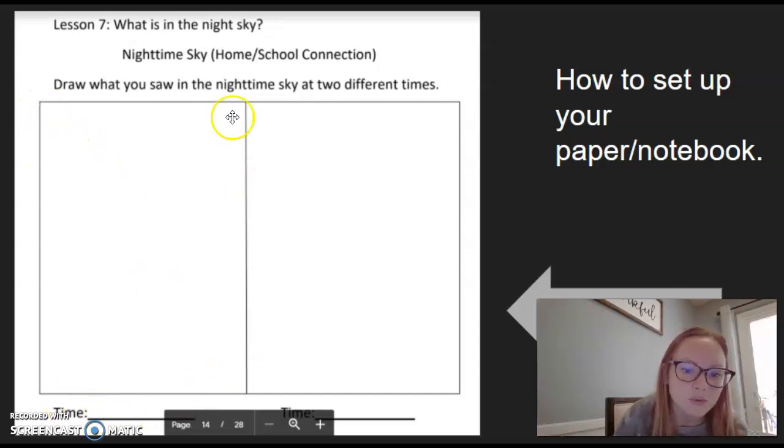So in this box, draw a picture of what you see in the night sky, and then go out a few minutes later at a different time and see if anything changed or if it looks the same, and record your time at the bottom of your page.